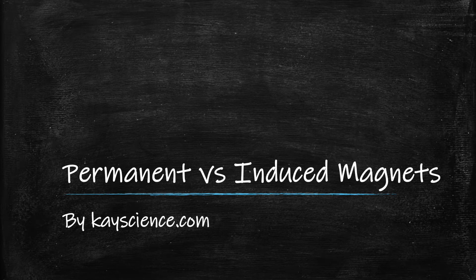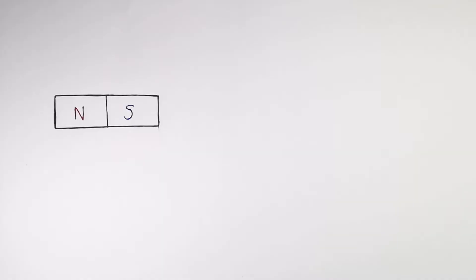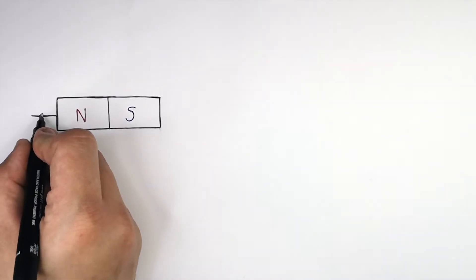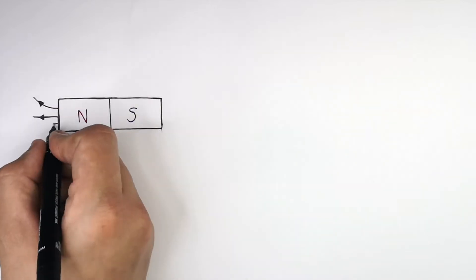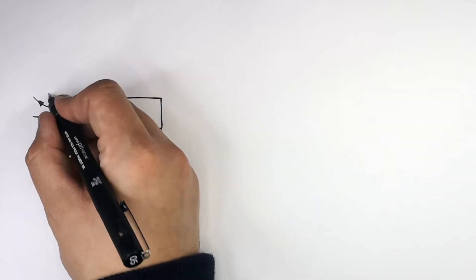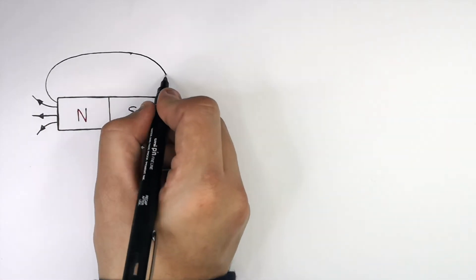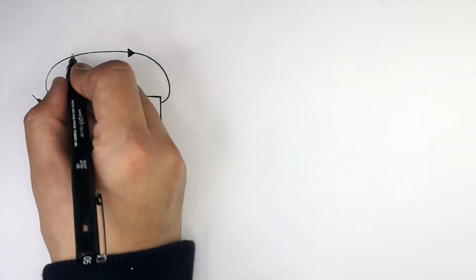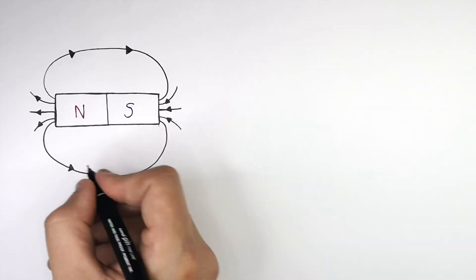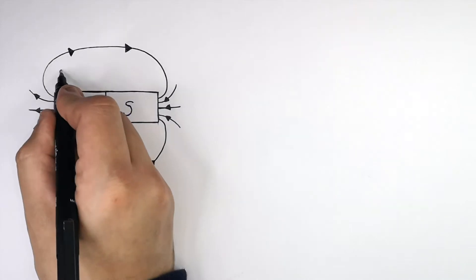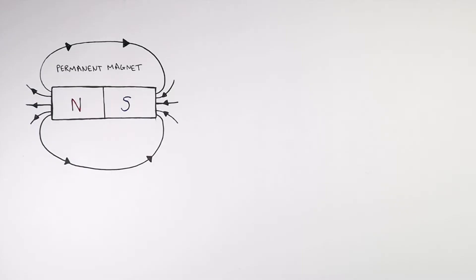Permanent versus induced magnets by kscience.com. This here is a simple bar magnet. On the left I've represented the North Pole and on the right I've represented the South Pole. These are the magnetic field lines surrounding a magnet, representing the magnetic field of the magnet, and they point from North to South. We call this a permanent magnet because it produces its own magnetic field.